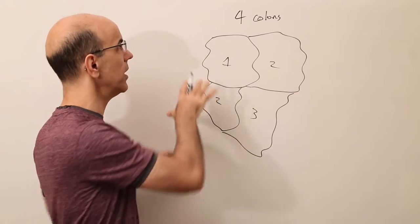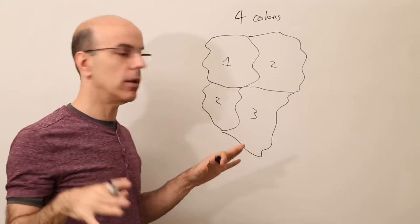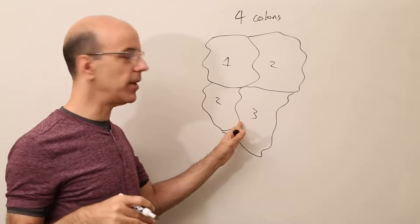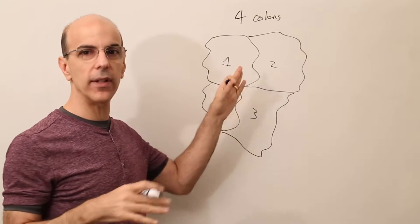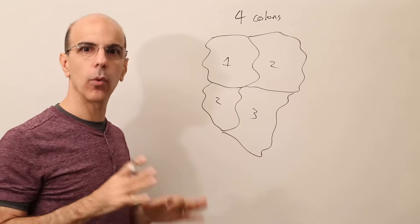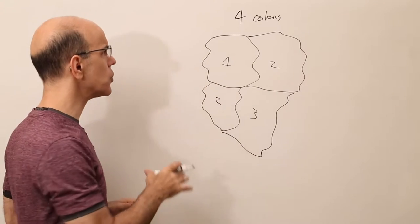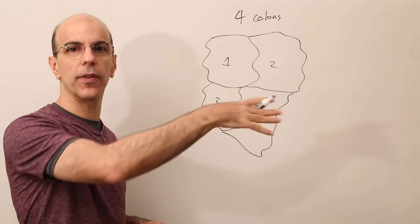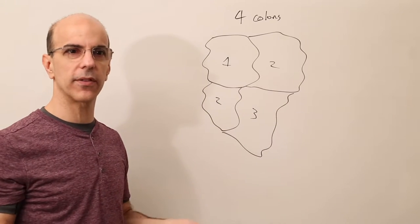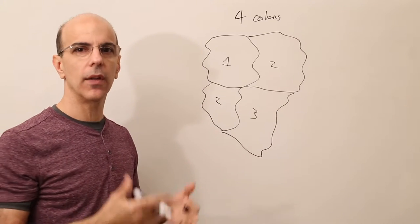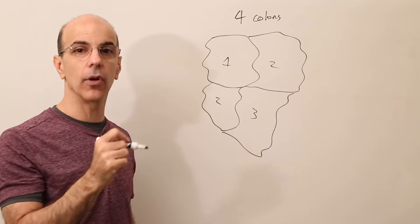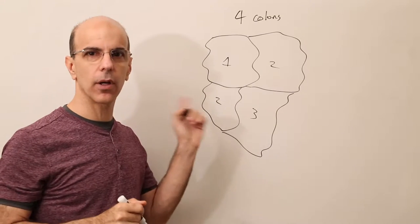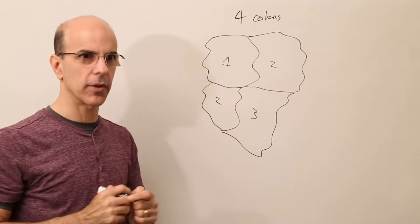So the idea was: could we prove that four is the limit? Do we know that there isn't some map somewhere that you could conjure up that would require five? That's the four-color map problem, first and foremost.